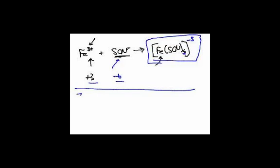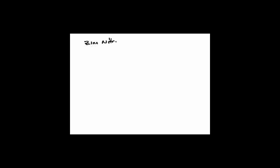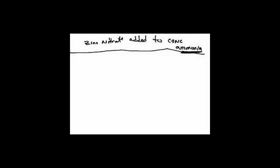Let's say I have zinc nitrate added to concentrated ammonia. When you see ammonia in a product prediction problem, that's one of the ligands — this is going to be a complex ion. Double-check by looking for a transition metal — and there's zinc. Ammonia is a bit tricky because it also appears in acid-base problems, but zinc nitrate is not an acid or base, so we can conclude it's a complex ion problem. I'll break zinc nitrate into ions: Zn²⁺ plus NO₃⁻, because all nitrates are soluble.